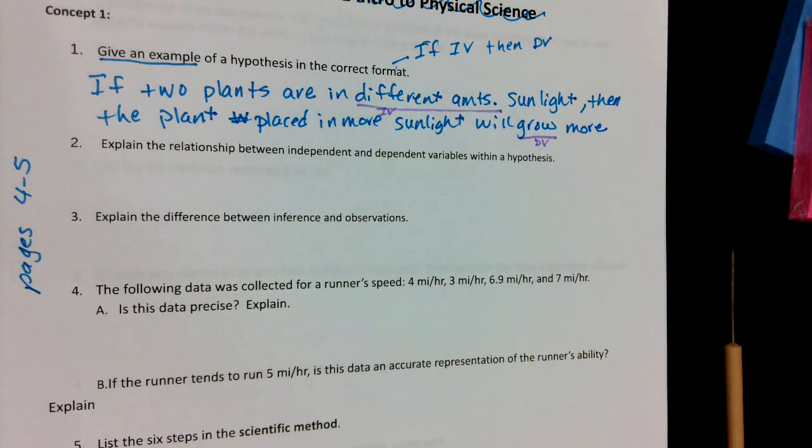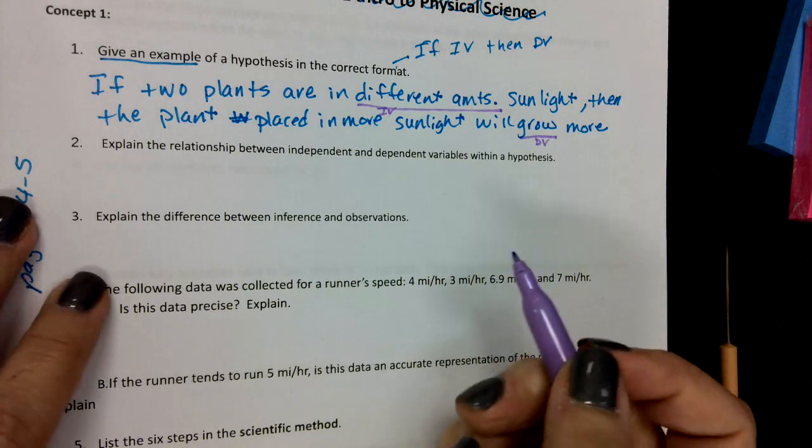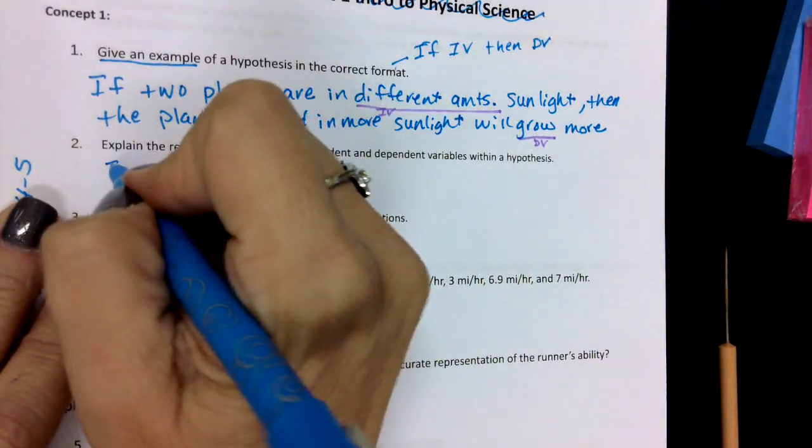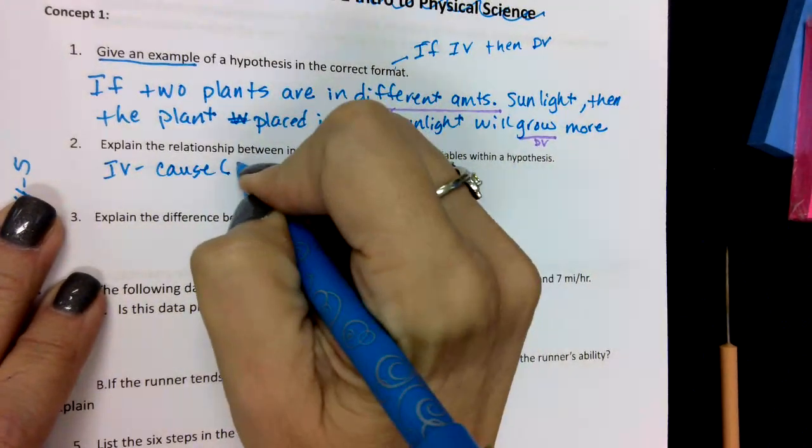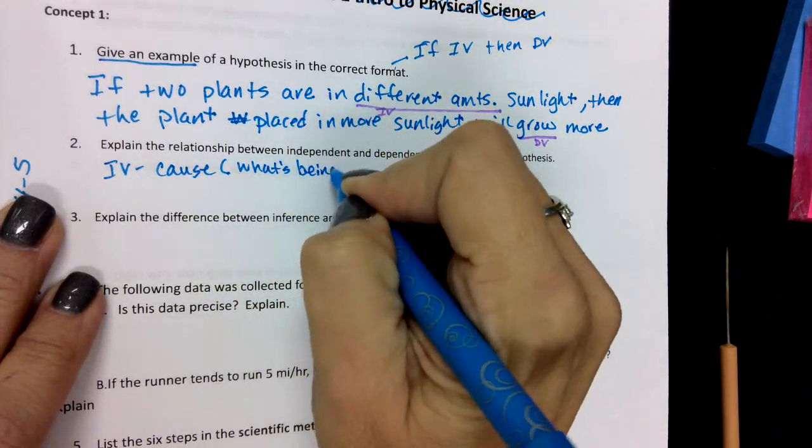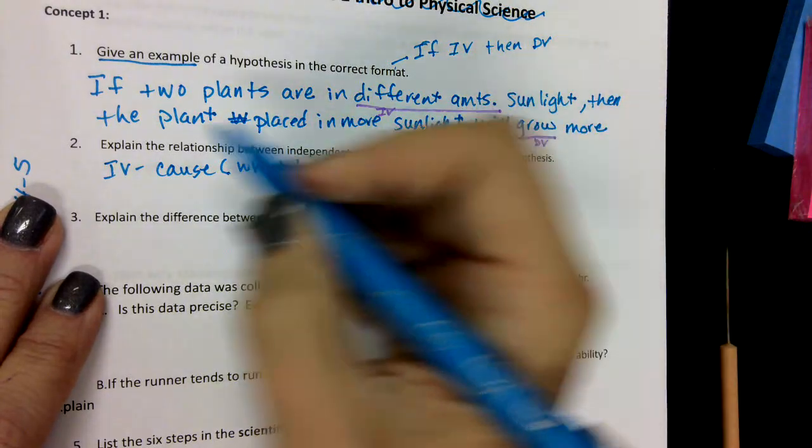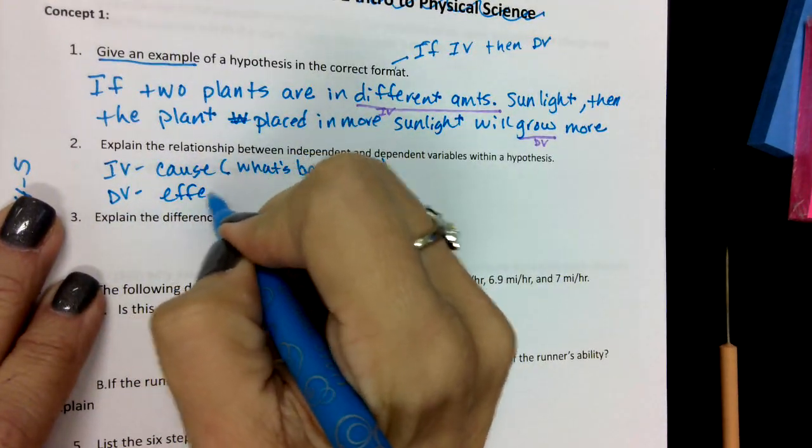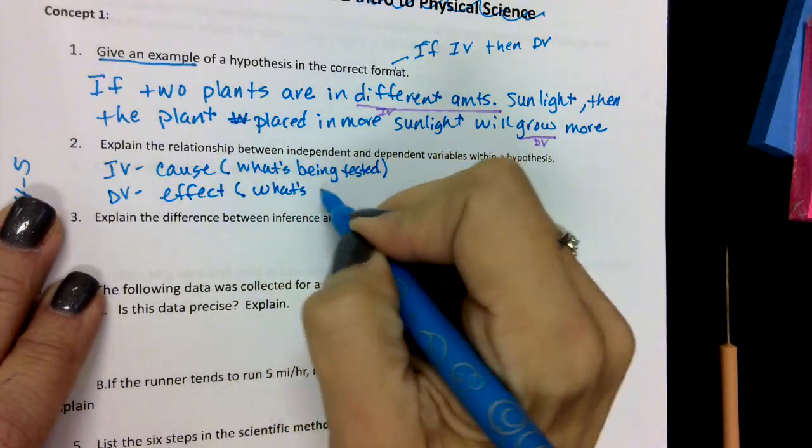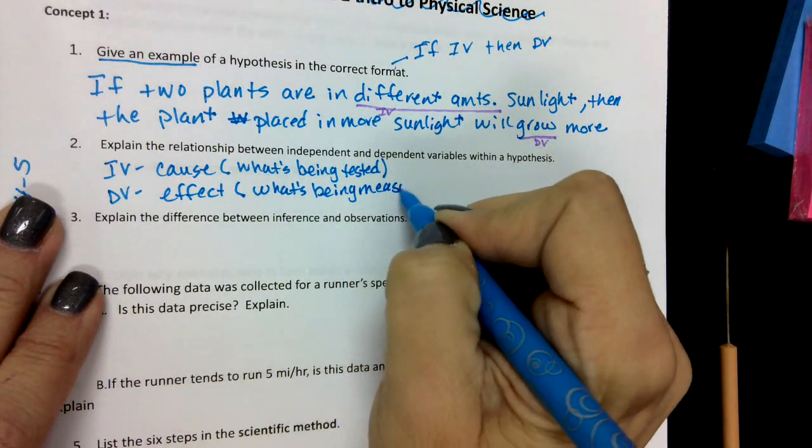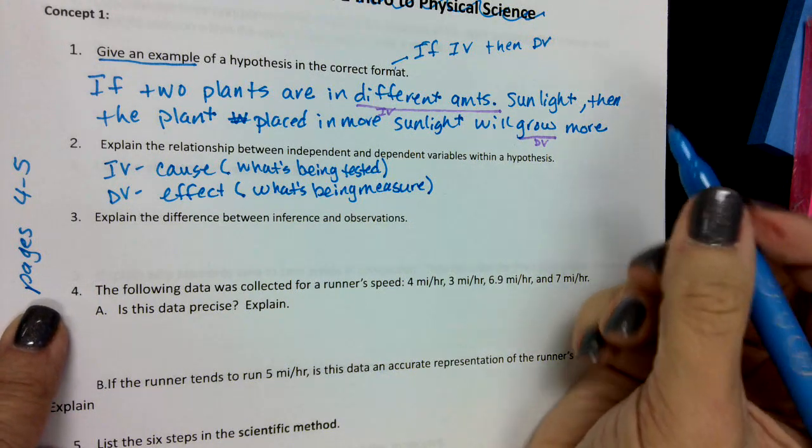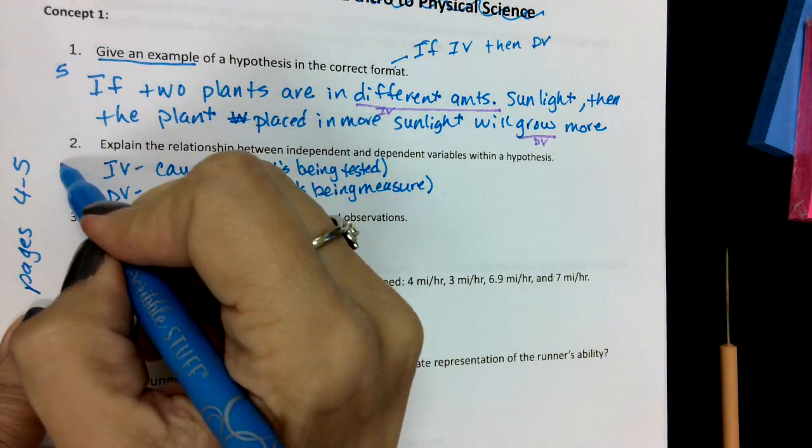All right, then it said to explain in number two the relationship between. And if you go back in your notes on page four, somewhere it should have said that the independent variable is the cause. So I'm going to abbreviate it: IV is the cause, and I always like to say it's what's being tested. And the dependent variable is an effect. So the relationship is cause and effect, and this is what's being measured. This was on page five, this was from our notes on page four.